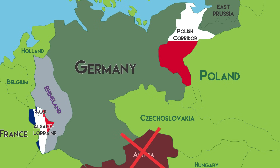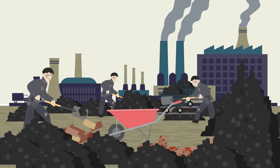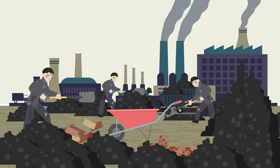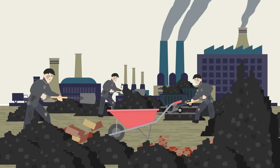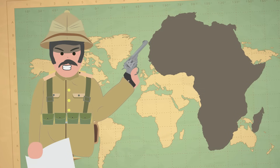The Saar, which had rich coal fields, was given to France for 15 years. All of Germany's colonies were taken and given to France and Britain as mandates.